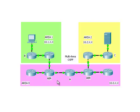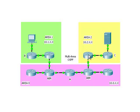Inside of area 1 we have these routers. This is router A, and we are going to be looking at its configuration, and also router B which is in area 1, and also router C which is in area 2. We are also going to take a look at the ABR, which is the area border router, which connects area 0 to area 2 and area 0 to area 1.